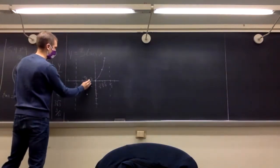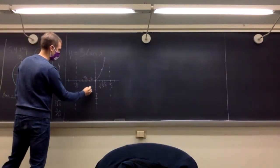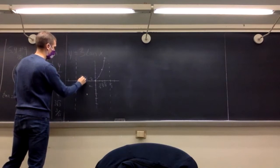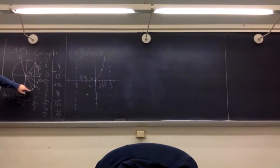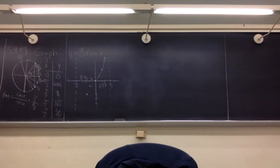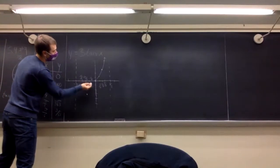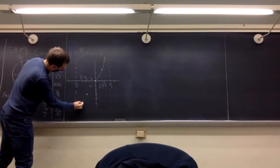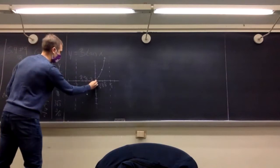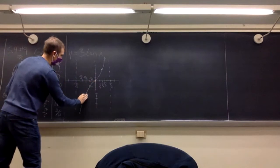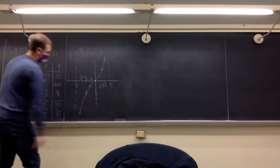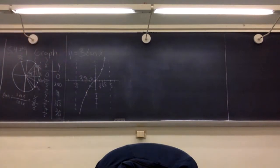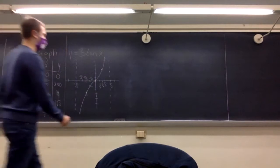For negative pi over three, the height is the same magnitude but opposite to the positive pi over three value, and the width is the same. So we have the same value we got with pi over three, but with a negative sign — we'll go down to about negative 5.2.